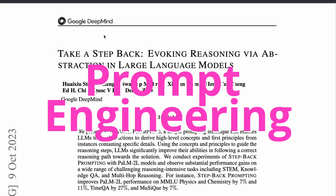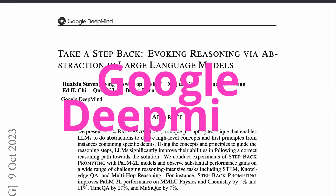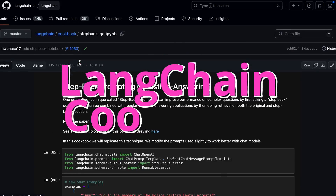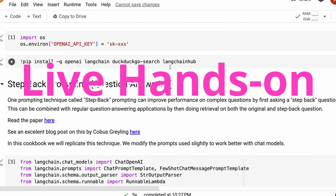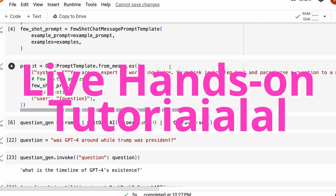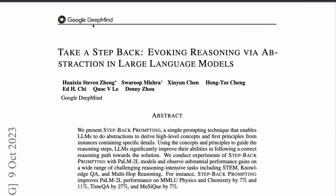We are going to learn a completely new prompt engineering technique called Step Back Prompting, developed by Google DeepMind. We will quickly learn what this technique is, then use a cookbook put out by LangChain, and see a live demo of how you can use Step Back Prompting to improve your RAG — Retrieval Augmented Generation. The first thing is we have a new paper called 'Step Back Prompting' or 'Take a Step Back: Evoking Reasoning via Abstraction in Large Language Models.'